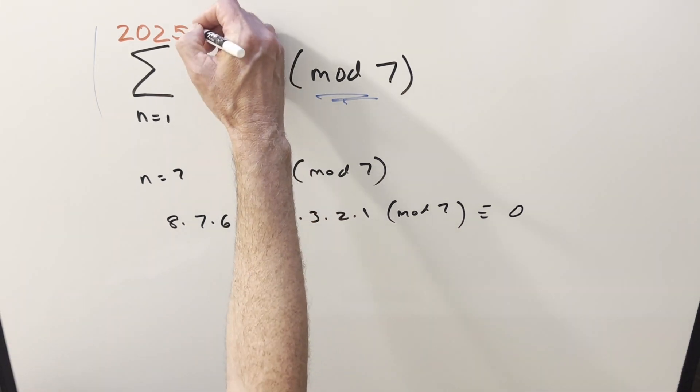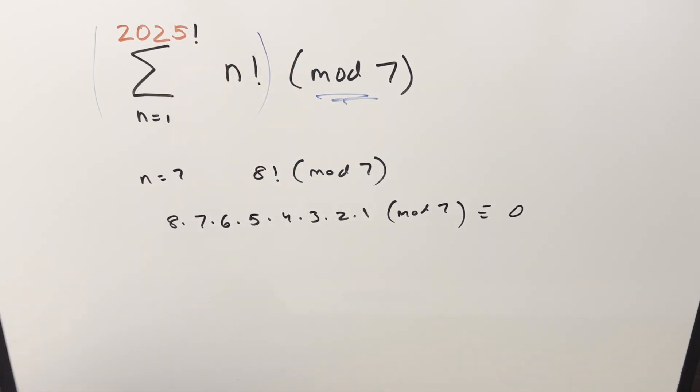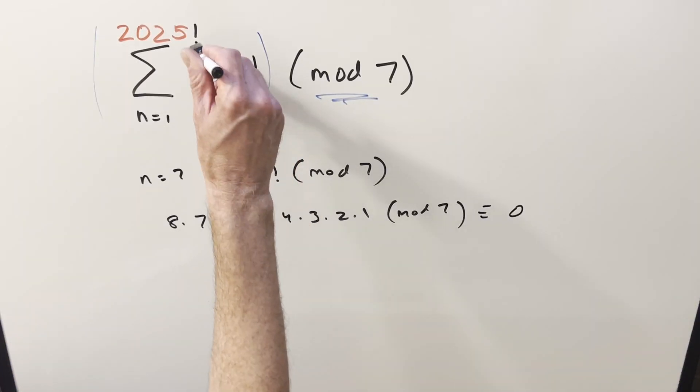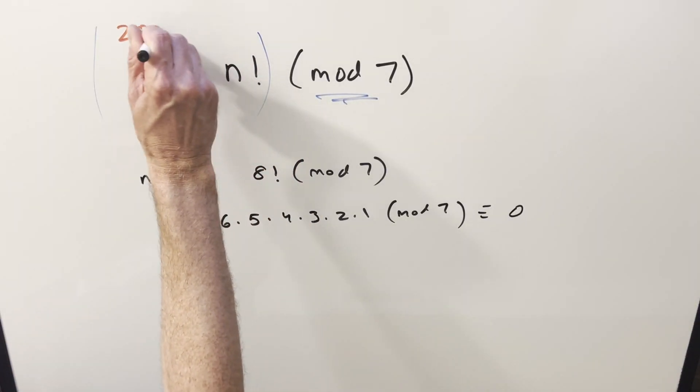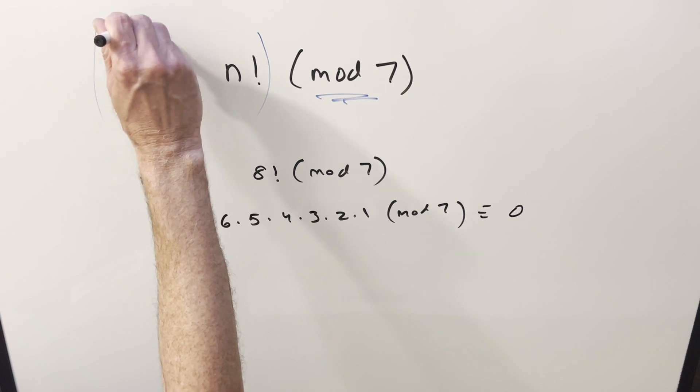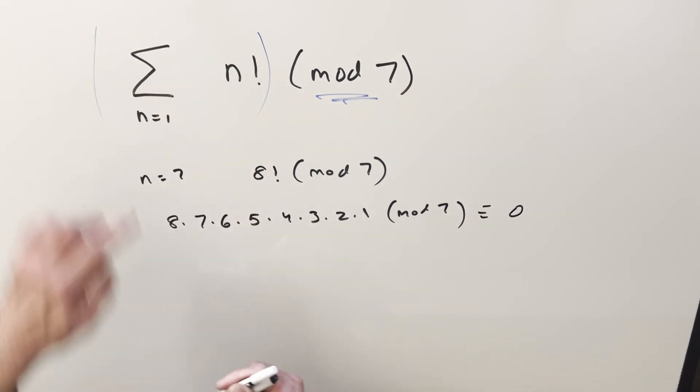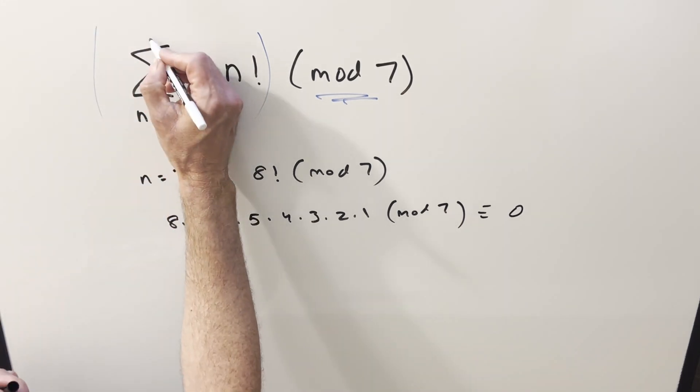It could be 2025 factorial there which would be even an unfathomable number. But we don't need any of that because 7 factorial and everything above it's going to divide evenly. So we can actually just go 1 to 6.